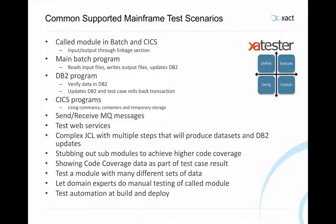Some test cases may not test programs but instead test JCL — you might have a big JCL with multiple steps and just want to submit a job and check that produced output datasets and DB2 updates are correct. Very importantly, you can also stub out sub-module calls in a test case to achieve higher code coverage percentage. For instance, if an if-statement depends on a value from a sub-module, you can decide that the sub-module should return a specific value, causing the program to enter that branch. You can verify this using code coverage engines, which XA Tester integrates with.